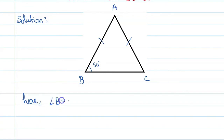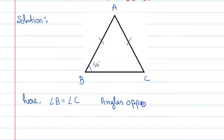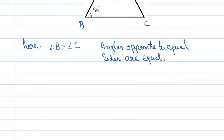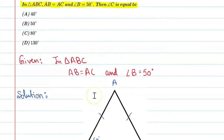Angle B is equal to angle C. Since angle B is 50 degrees, angle C is equal to 50 degrees. The correct option is B.